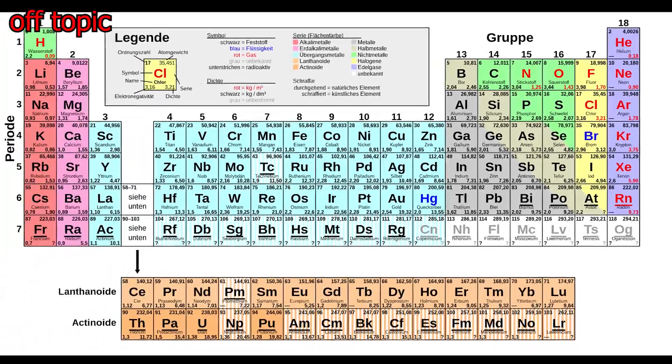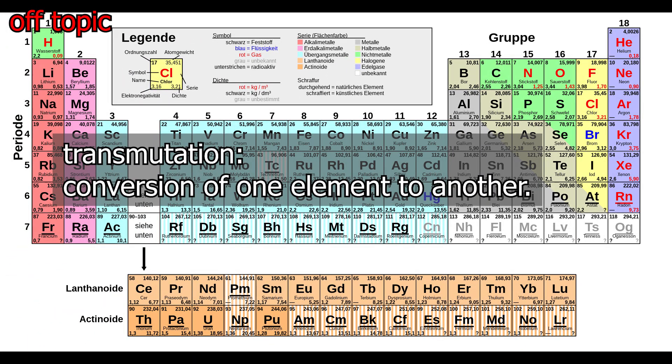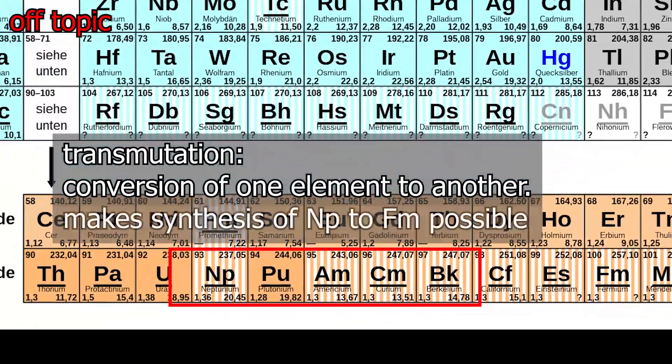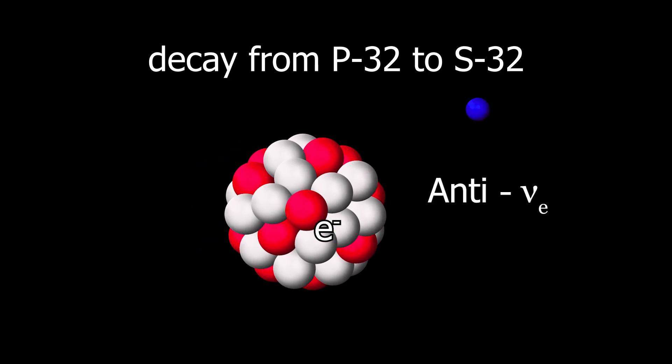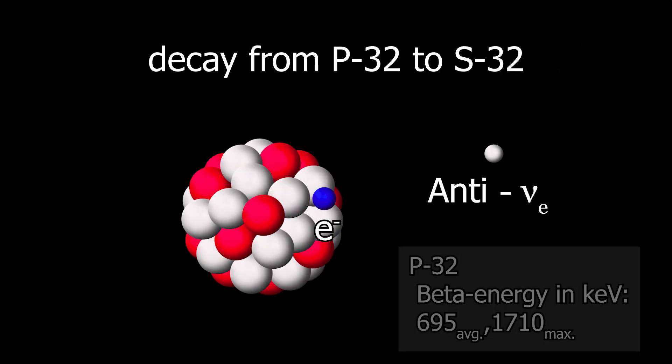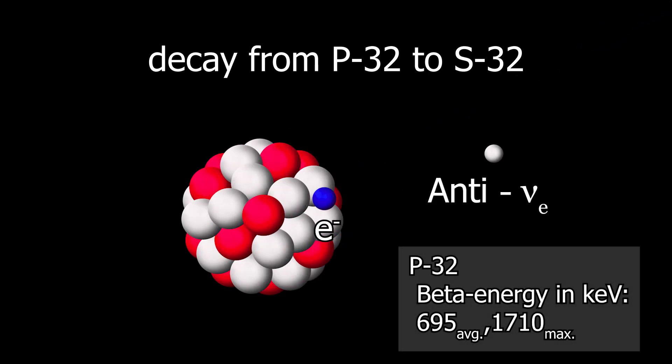This is an important concept used in transmutation, i.e. the synthesis of elements. The anti-electron neutrino generated in the beta minus decay is very light, which can lead to differing momentum distributions between the neutrino and the electron. Hence, when we talk about beta radiation, we refer to an average and a maximum beta energy.